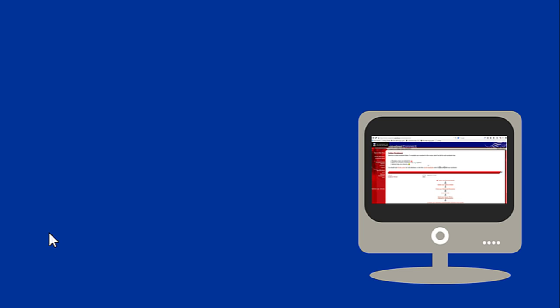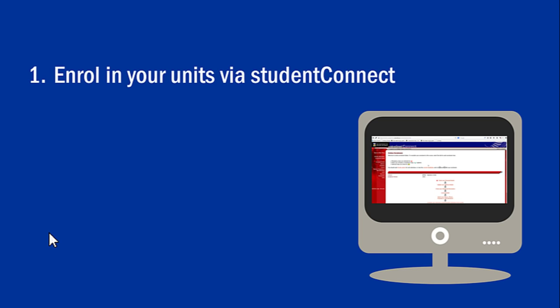Before you choose your classes you need to make sure you're enrolled at UWA. If you haven't enrolled in any units yet, please do so through the Student Connect website.